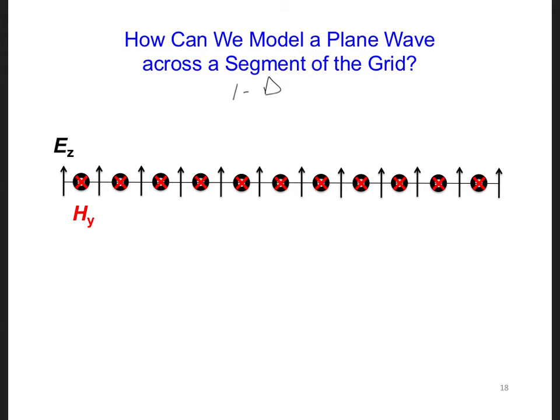The basic idea behind this plane wave implementation idea is that Maxwell's equations are linear, so we can split the electric and magnetic fields of our grid into incident and scattered fields. For example, the total electric field modeled in our grid can be decomposed into an incident electric field and any scattered electric field component.